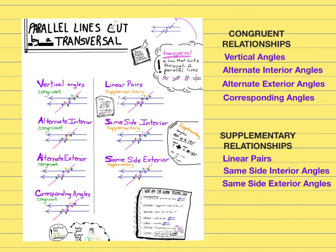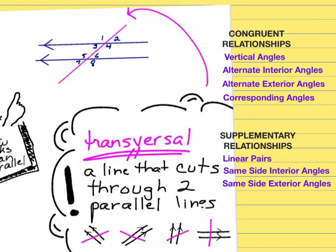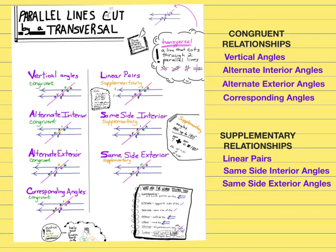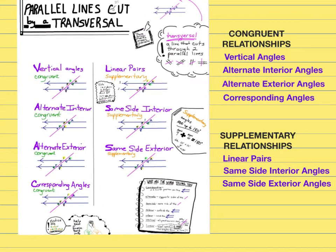We have several different types of relationships that can be created with parallel lines. Parallel lines are lines that go in the same direction and they never touch. The line going in another direction that intersects with those two parallel lines is called the transversal. When this happens, it creates a combination of eight angles. We're going to look at those eight angles and the different relationships that are created so that we can tell the measurement of the angles in those relationships.